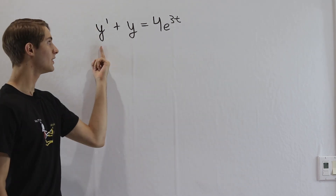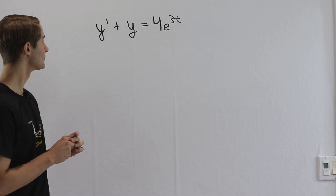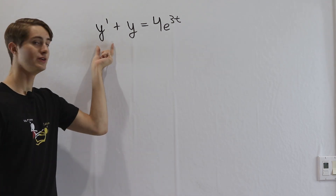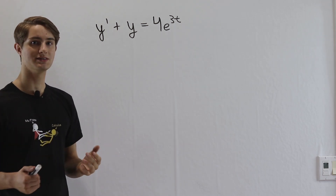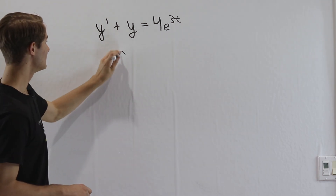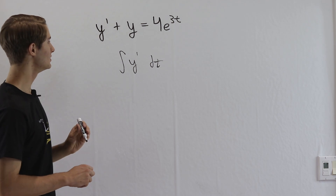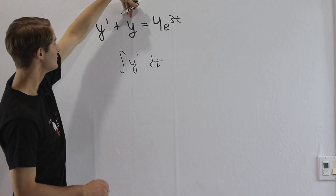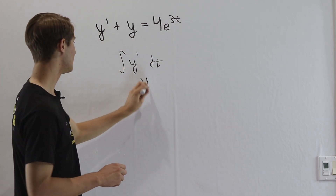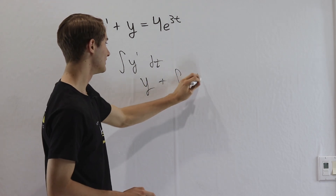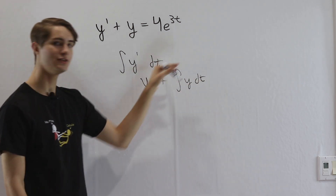If there were some way that we could turn y' into some form of y, that would make it a lot easier to solve this equation. So let's think about what function we can apply to a derivative that gets us back to the original function. Of course there is one function that does that — it's called the integral. So we might think to take the integral of y' with respect to t. But there's a problem: if we take the integral of y', we also have to take the integral of y, and it seems like that hasn't helped us very much because we end up with y from y' but then we also have the integral of y dt.